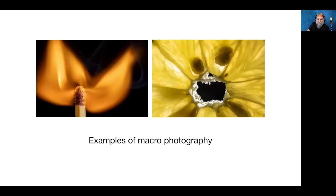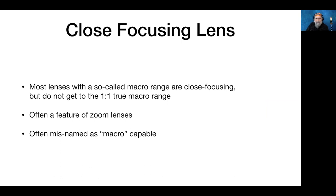Here are a couple of macro examples — a matchstick that is the same size on the camera sensor as it is in real life, and a creature found in a lemon. Many zoom lenses call themselves macro but they're really close-focusing lenses, because they do not get down to the true one-to-one macro range.